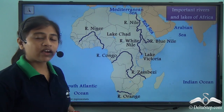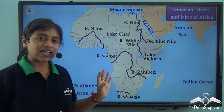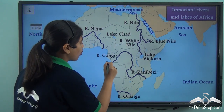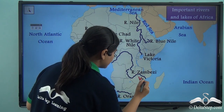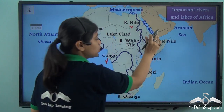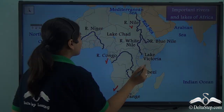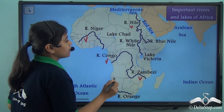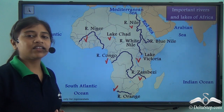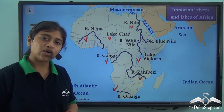Here is a map showing all the important lakes and rivers of the continent of Africa, namely River Congo, River Zambesi, River Orange, River Nile with its two major tributaries the White Nile and the Blue Nile, River Niger, Lake Victoria, and Lake Chad. These are the most important lakes and rivers of the African continent.